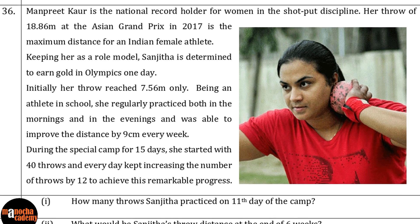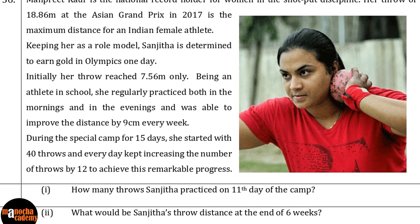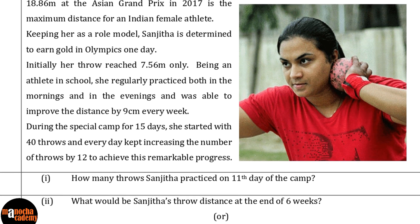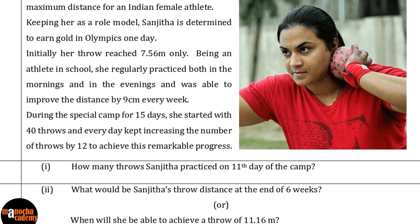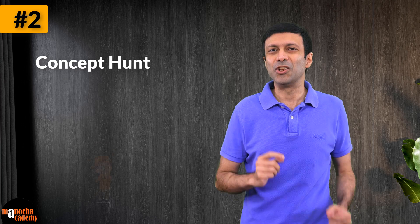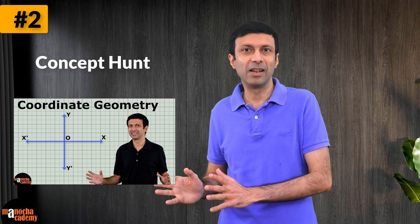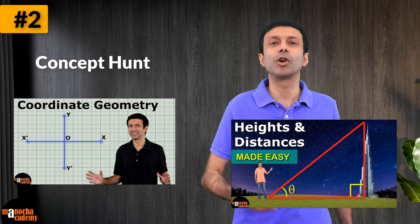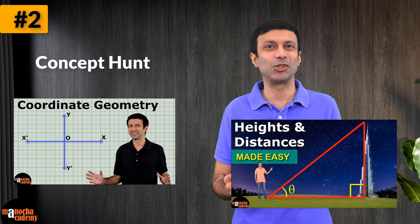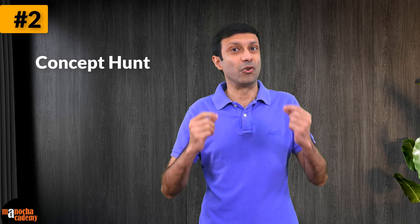For example, if you look at this maths question from the CBSE sample paper, it has a lot of details about how Sanjita is training for a shot put event — how many throws she starts with and how many throws she keeps increasing each day. But what is the concept hidden behind the question? If you read it carefully, you can figure out it is based on arithmetic progression. So you need to use AP and its formulas to solve this question. Other popular topics for application based questions in mathematics are coordinate geometry and applications of trigonometry, also known as heights and distances. So make sure you revise them before your exams. Remember to do the concept hunt and filter out the concept from your question.